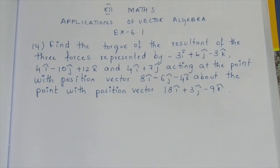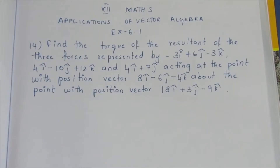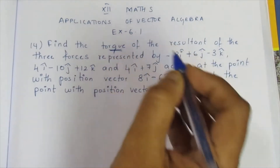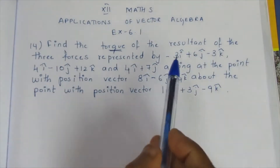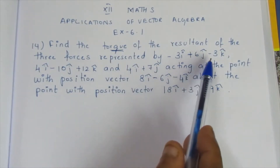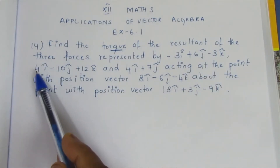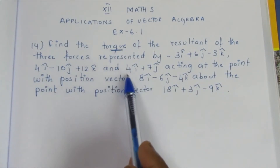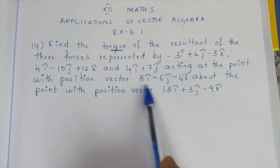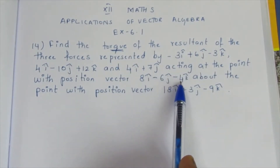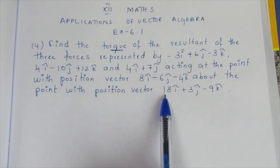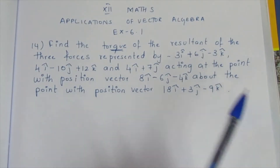Hello viewers, I am Aitli. In a 12th max application of vector algebra, Exercise 6.1, 14th sum. Question: Find the torque of the resultant of 3 forces. Forces represented by minus 3i-cap plus 6j-cap minus 3k-cap, 4i-cap minus 10j-cap plus 12k-cap, and 4i-cap plus 7j-cap, acting on the point with position vector 8i-cap minus 6j-cap minus 4k-cap, about the point with position vector 16i-cap plus 13j-cap minus 9k-cap.